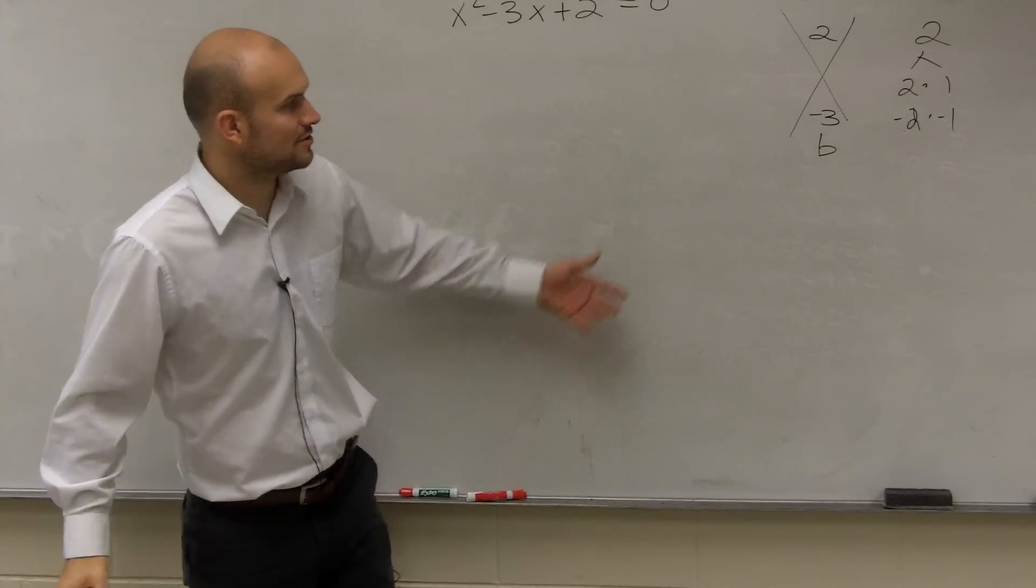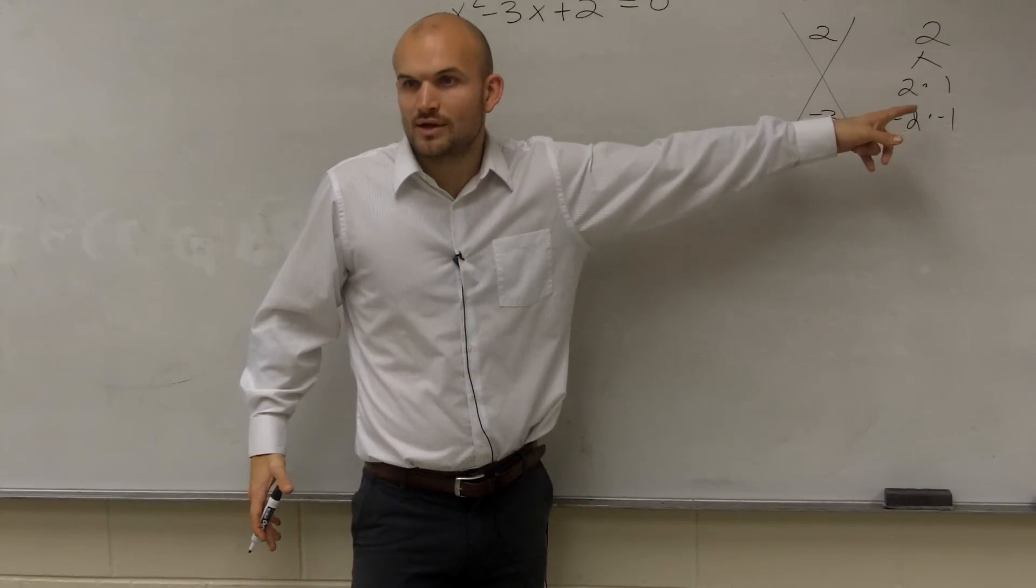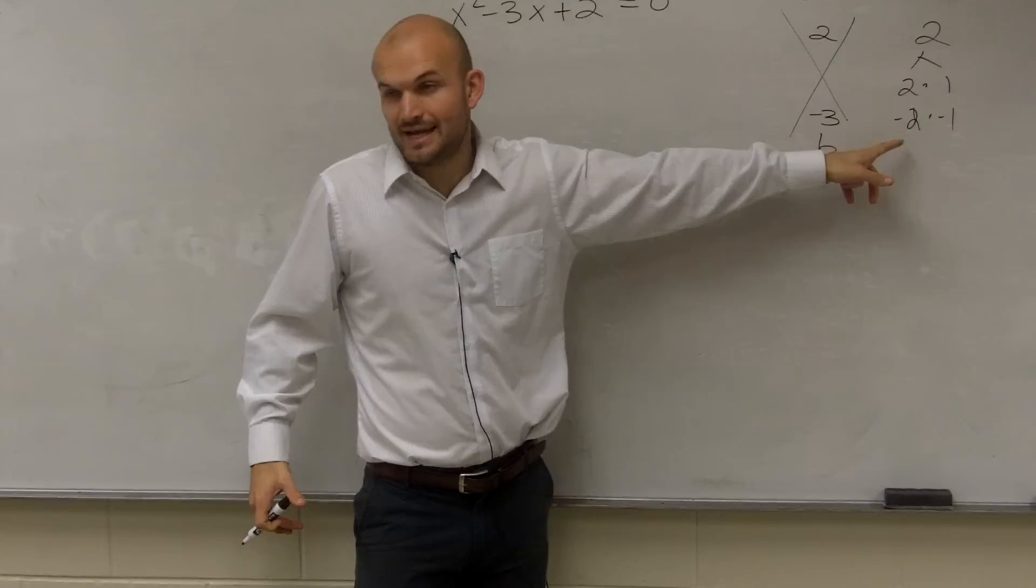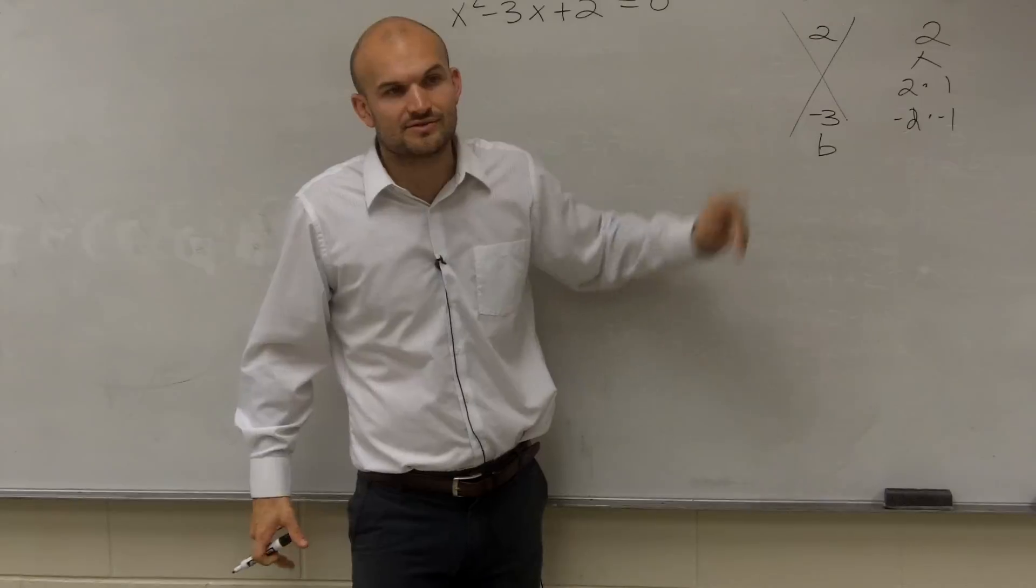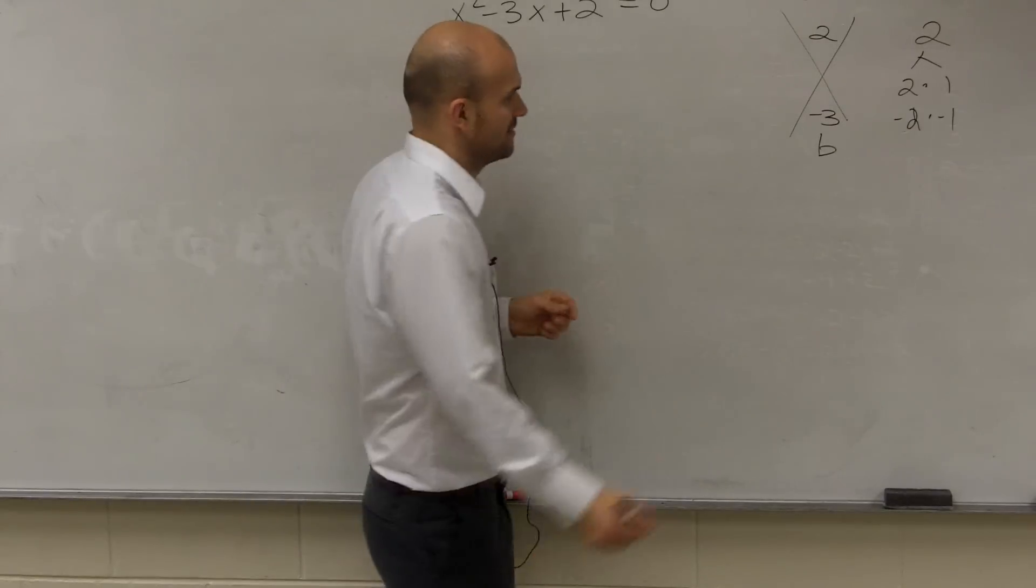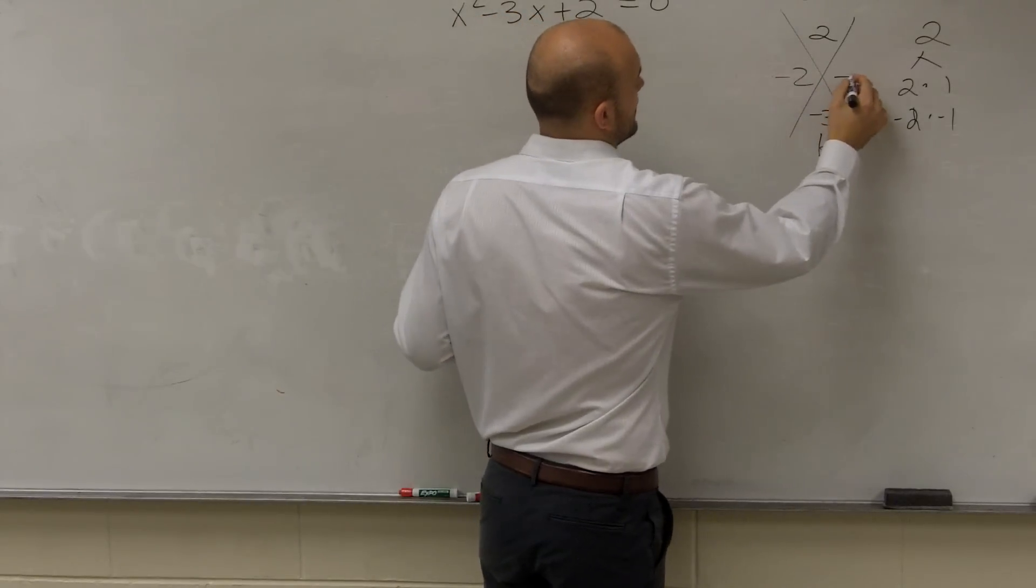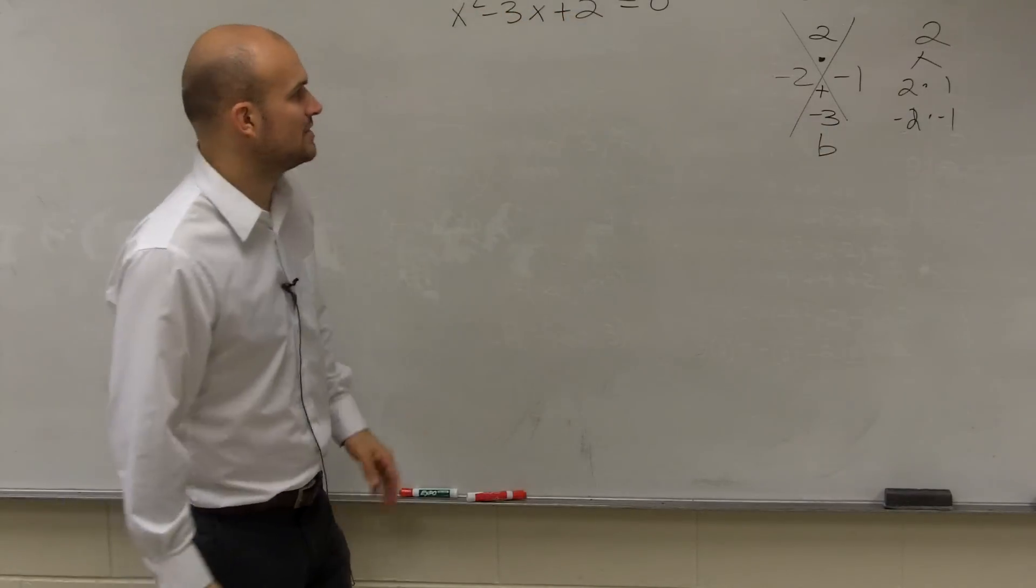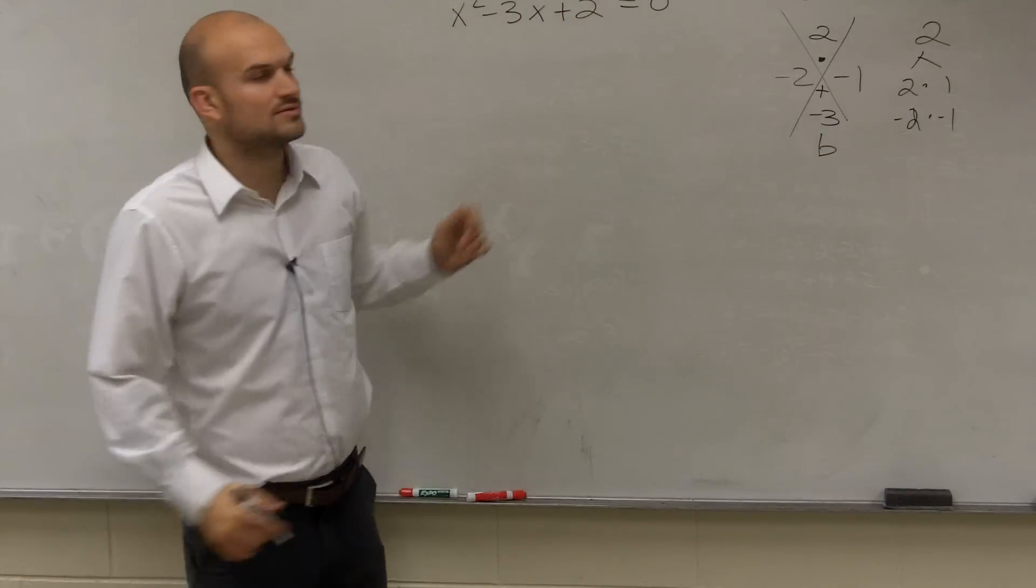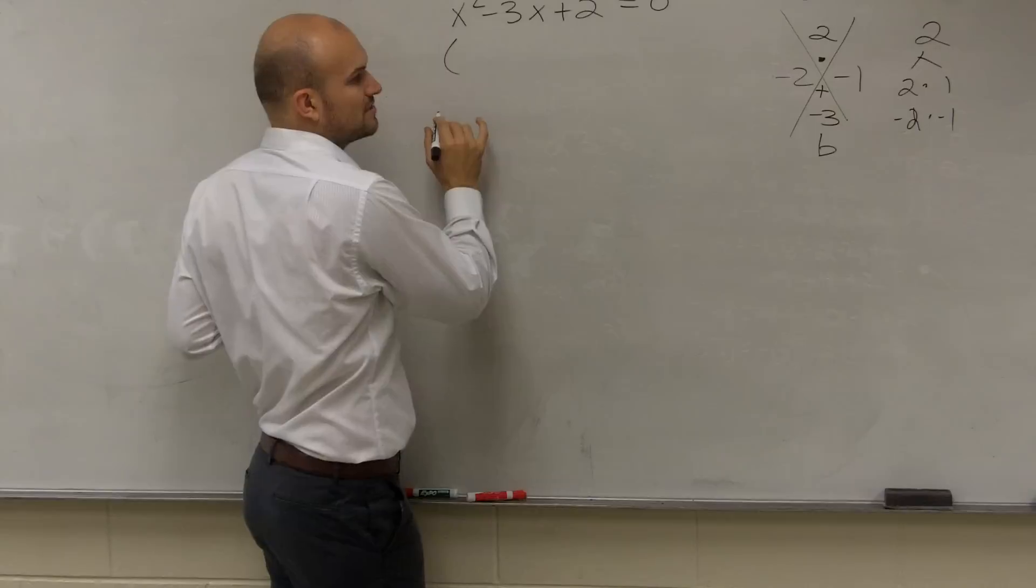Well, the only possible solutions for this, there's only two of them. It's either 2 times 1 gives you 2, and negative 2 times negative 1 gives you 2. But what's the only one that adds up to give you negative 3? So you write negative 2 and negative 1. What two multiply to give you 2, but add to give you negative 3. So what do I do with those? I write them as a product of two factors.